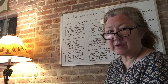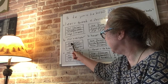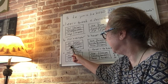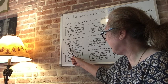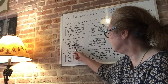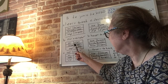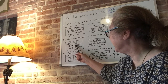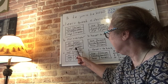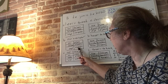Oír is an -er verb and that means to hear. Yo oí, O-I with an accent on the I. Tú oíste, O-I-S-T-E with an accent on the I. Él, ella, usted oyó with an accent on the O — there's a Y that takes the place of the I. Nosotros and nosotras oímos, O-I-M-O-S with an accent on the I. Vosotros and vosotras oísteis, O-I-S-T-E-I-S with an accent on the I. Ellos, ellas, and ustedes oyeron with a Y instead of an I — no accent, O-Y-E-R-O-N.